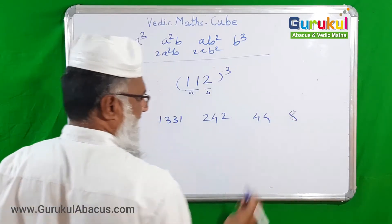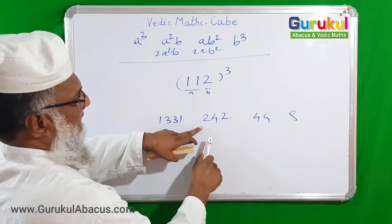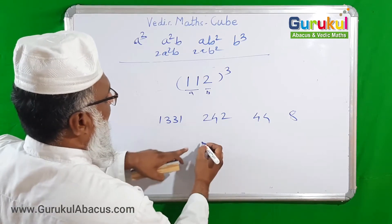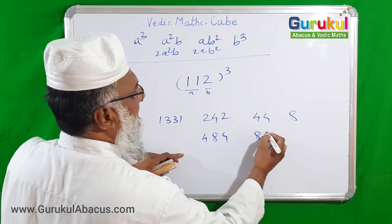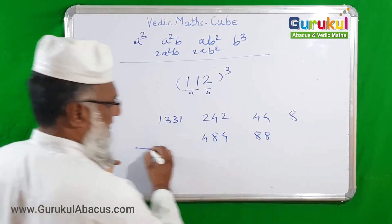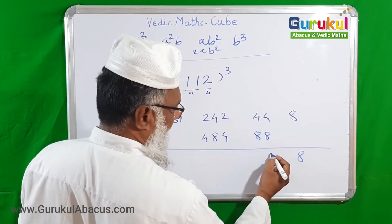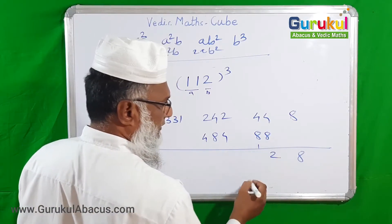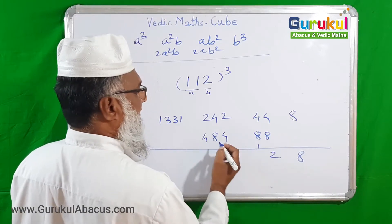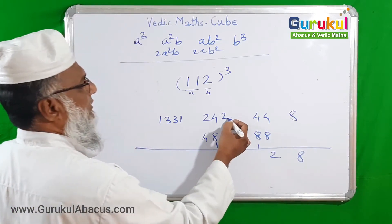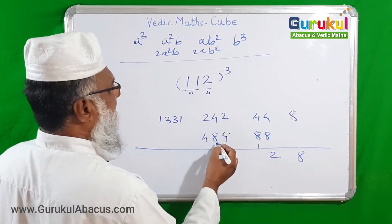Finally, B cubed: cube of 2 is 8. Now we double these numbers. Double of 242 is 484, and double of 44 is 88. Now we add: 8 and 8 is no carry, 8. Then 4 and 4 is 8, plus 2 from before is 12 — write 2, carry 1. Then 4 and 8 is 12, plus 1 is 13.